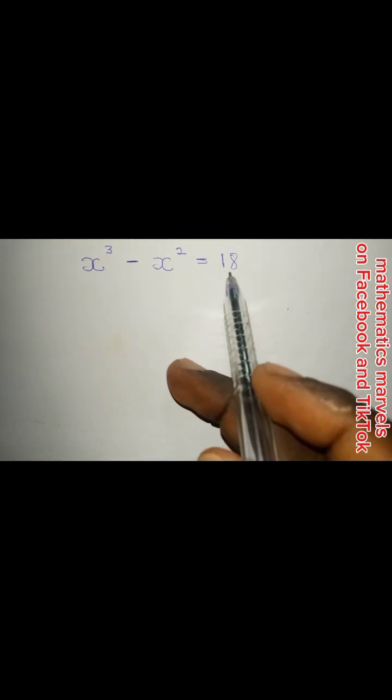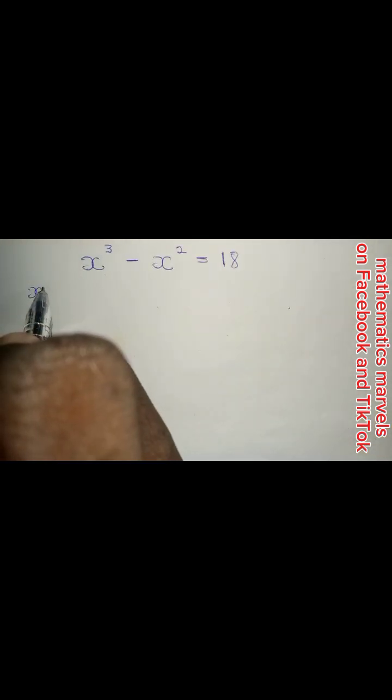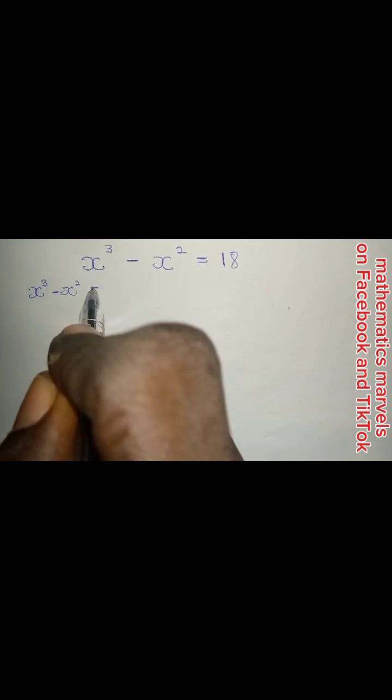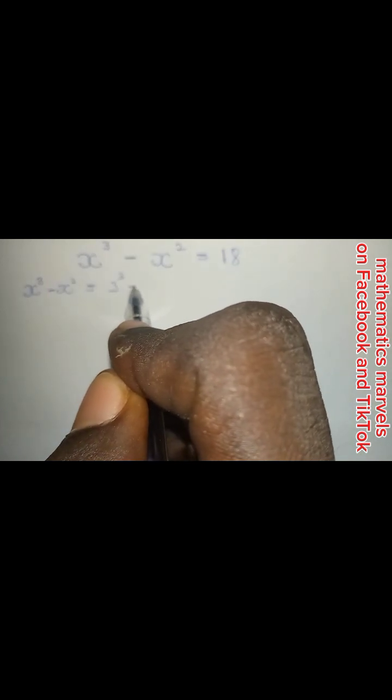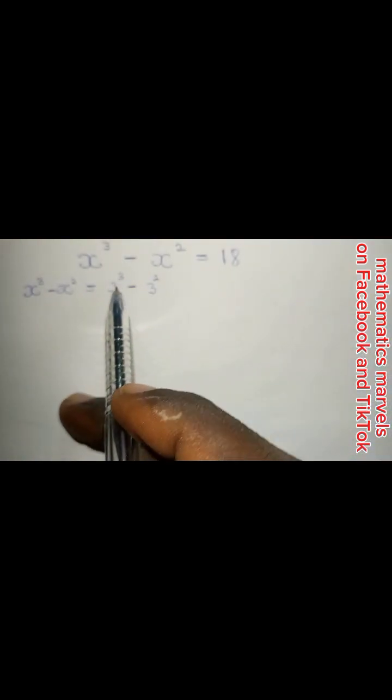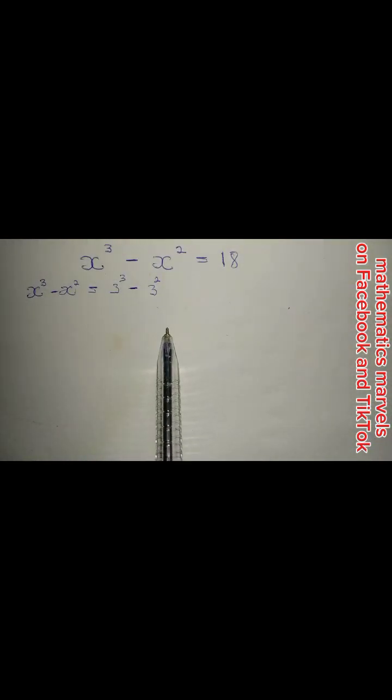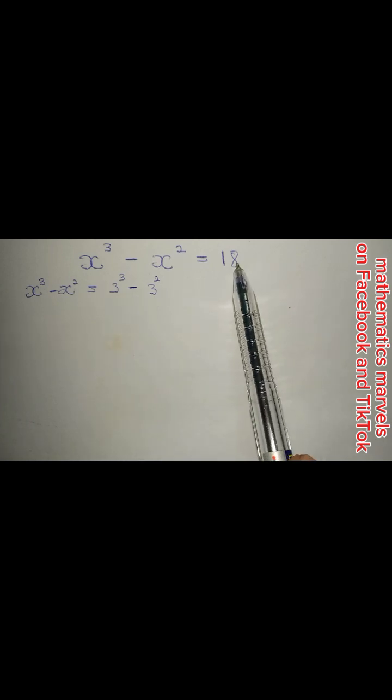First we will need to rewrite 18. So we have x raised to the power of 3 minus x raised to the power of 2 is equal to 18. We can rewrite 18 as 3 raised to the power of 3 minus 3 raised to the power of 2. Now 3 raised to the power of 3 is 27, while 3 raised to the power of 2 is 9. So 27 minus 9 is going to give us 18.